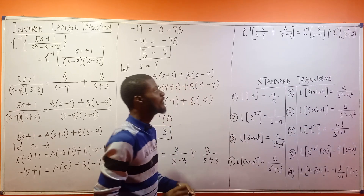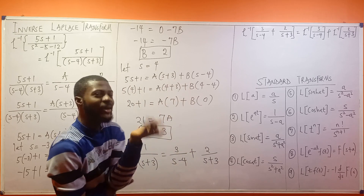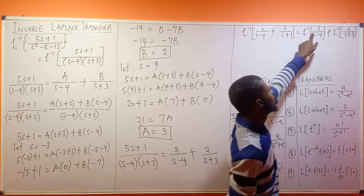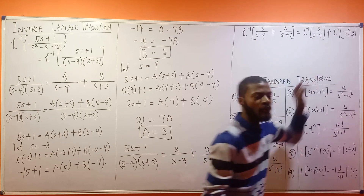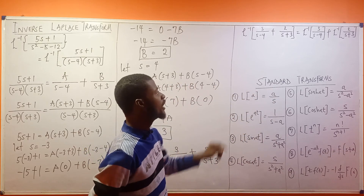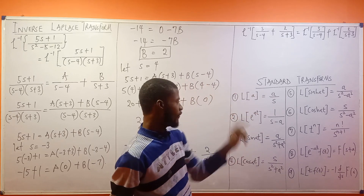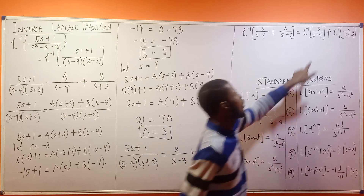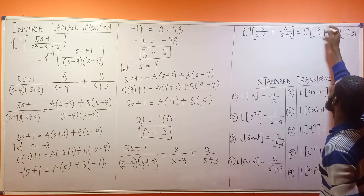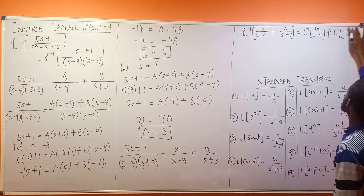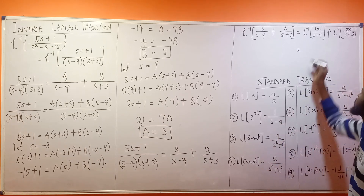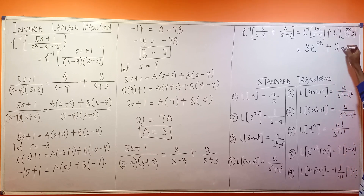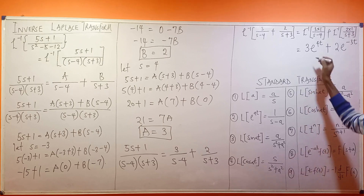Solving this is now very simple. The numerator is a constant and s is raised to the power of one, which matches the standard form 1/(s - a). We treat 3 as a constant (3 times 1) and 2 as a constant (2 times 1). Applying the inverse Laplace transform, the final answer is 3e^(4t) + 2e^(-3t).